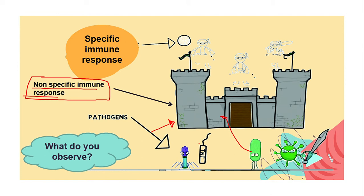If the microbe was able to penetrate the natural barrier, it will face the inflammatory reaction and phagocytosis. But what if the pathogen is very strong and all these non-specific weapons are not enough? If the microbe gets past the natural barrier and the inflammatory reaction with phagocytosis, we have another weapon: the specific immune response, shown here in the picture like ninja turtles — soldiers that fight the microbe differently from the non-specific immune response.